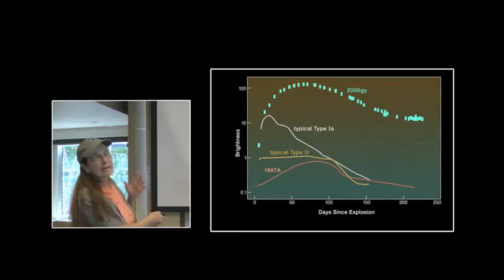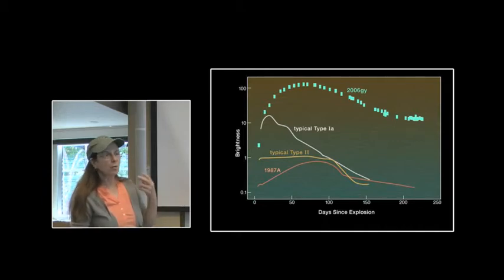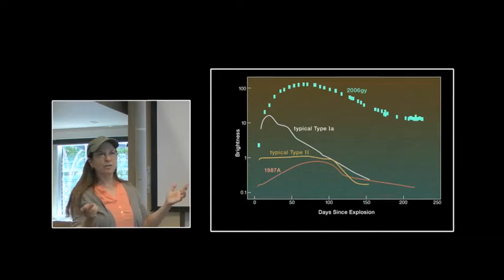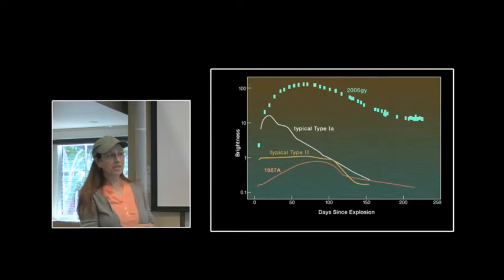This is a typical type 2 light curve, but we've already seen that there are three different kinds of light curves. The only one we've actually seen from start to finish was 1987A, and it doesn't match any of the three generalized light curves that I've shown you so far. It just goes to show you that we really still do not know what typical is.